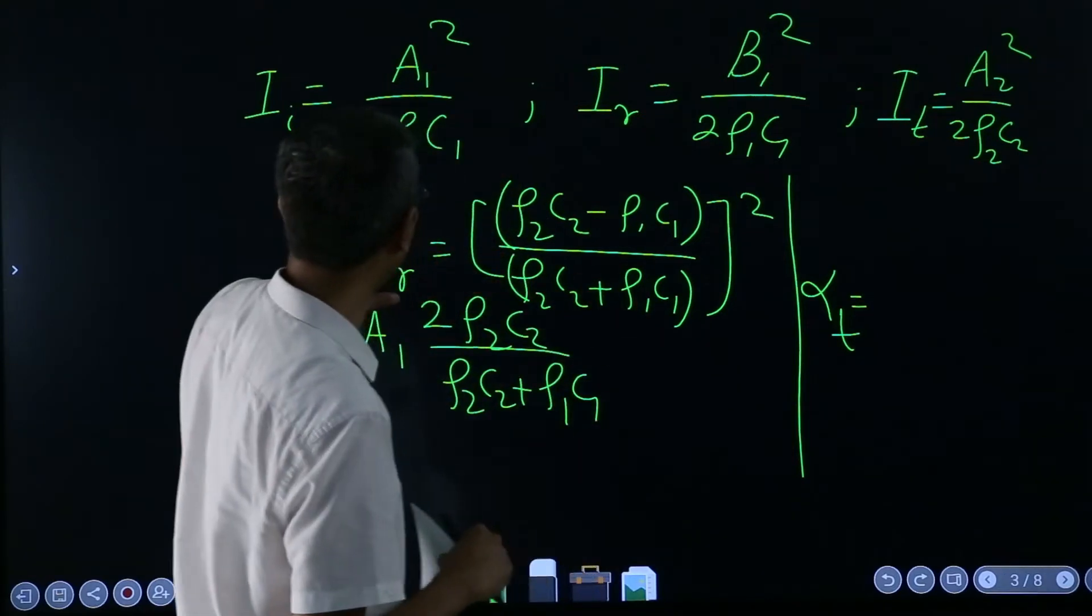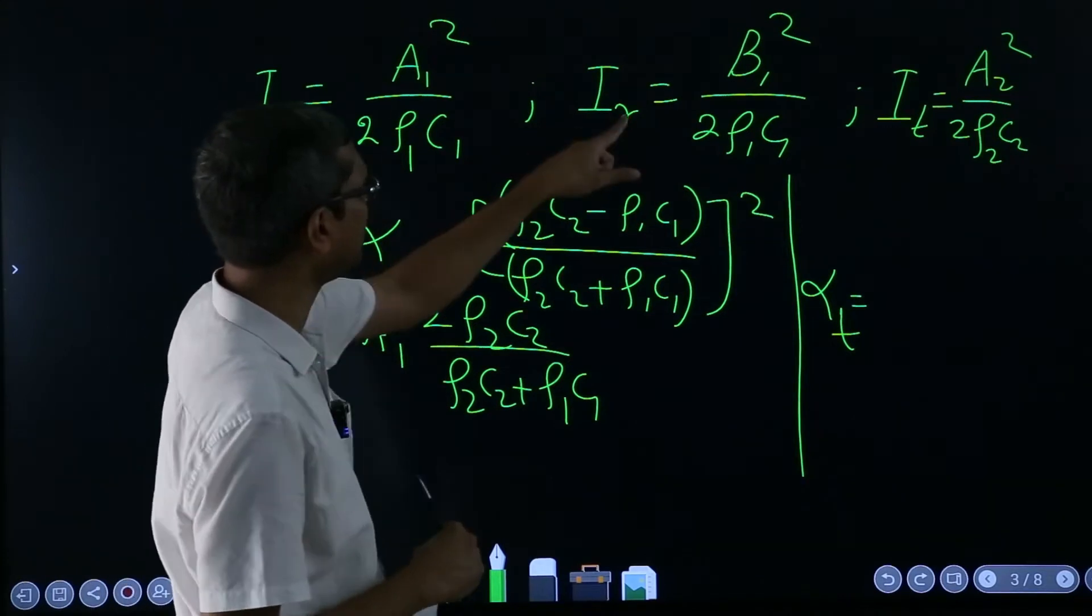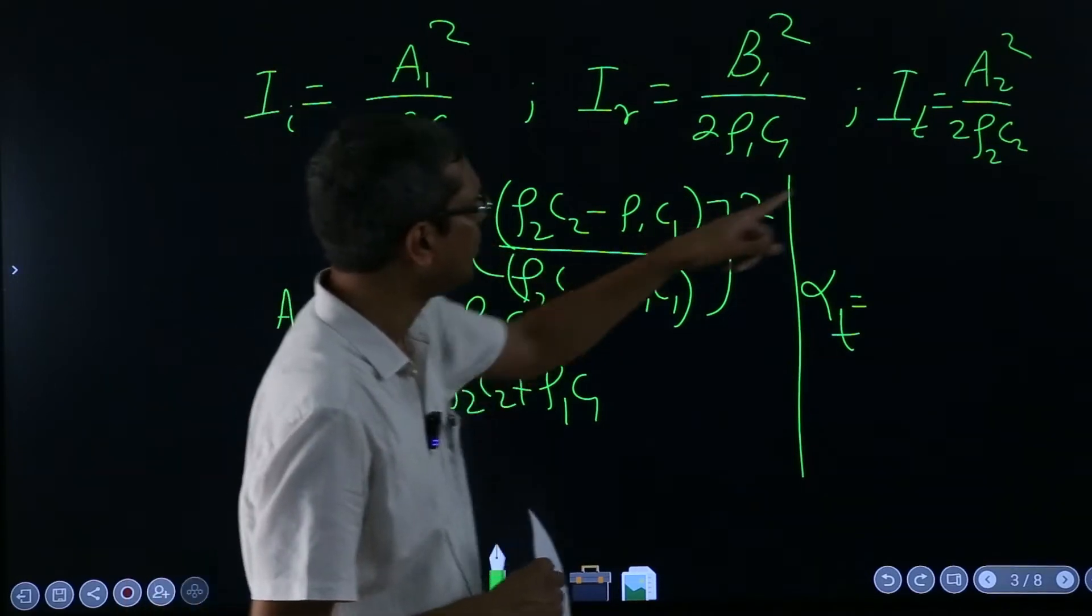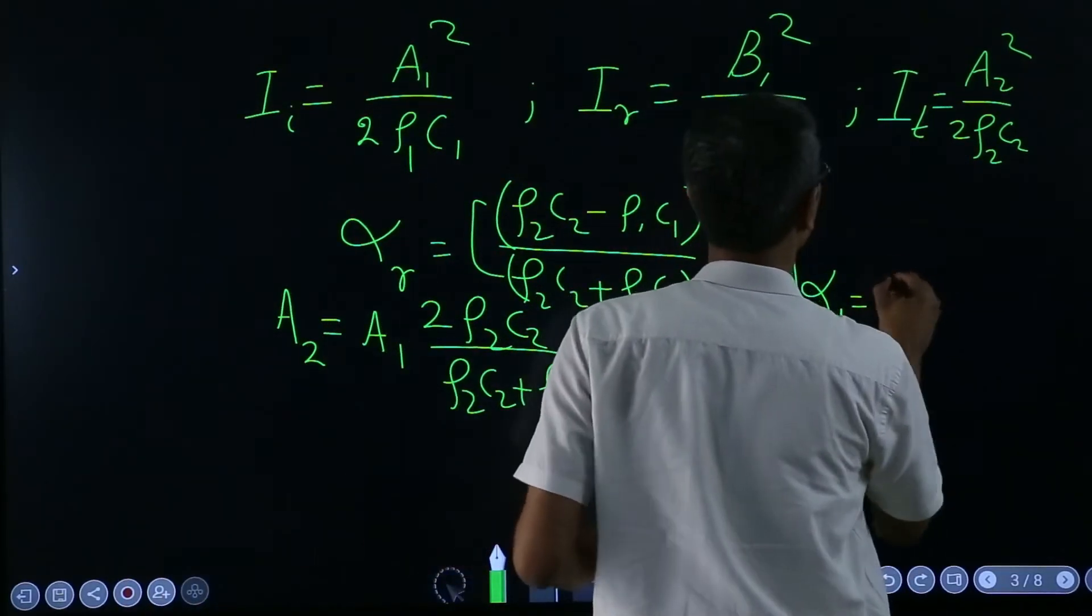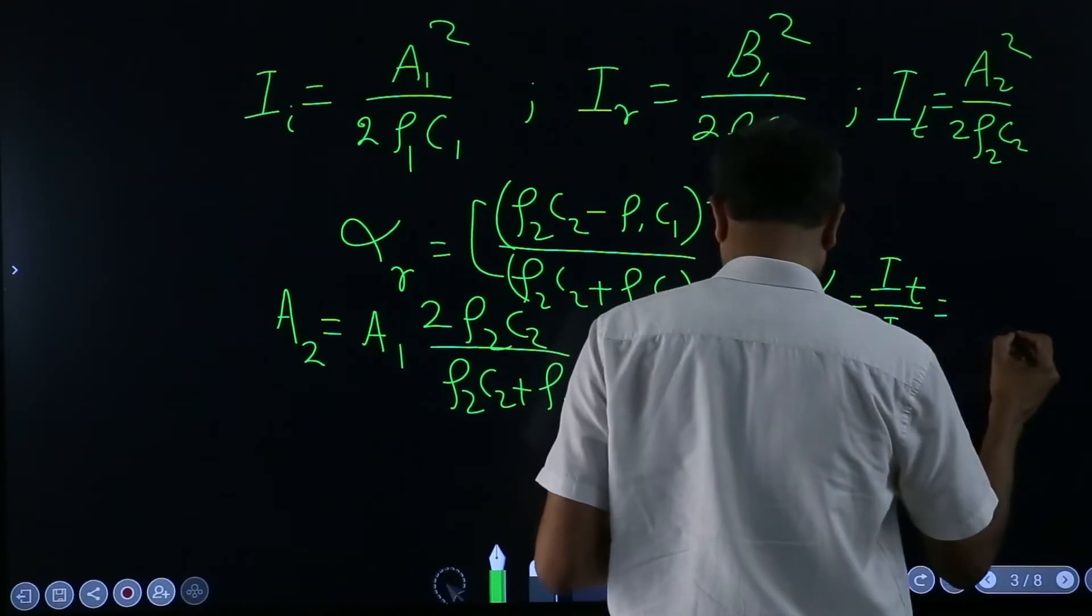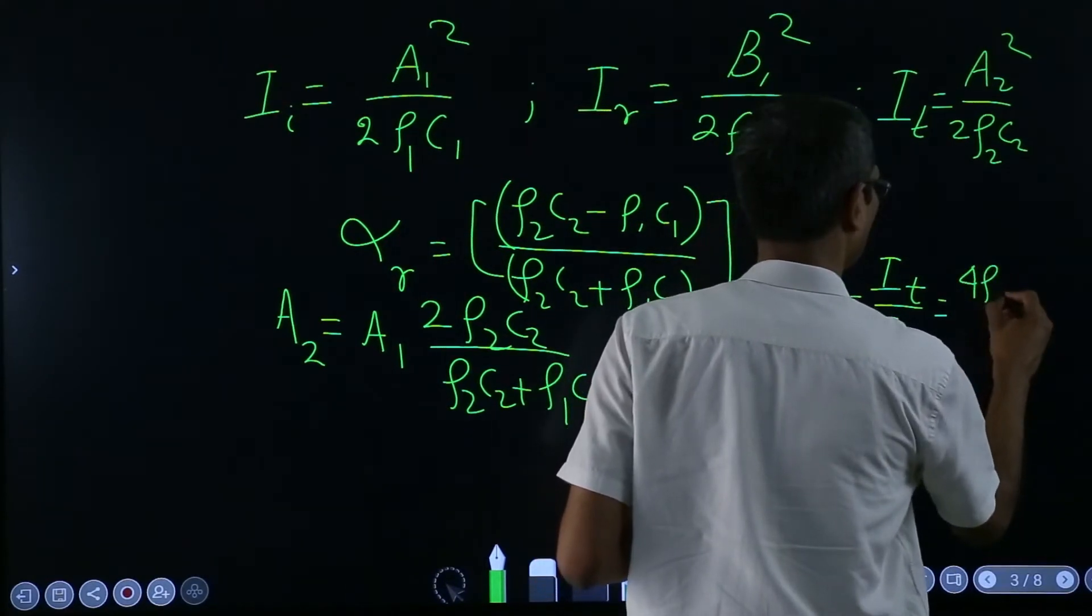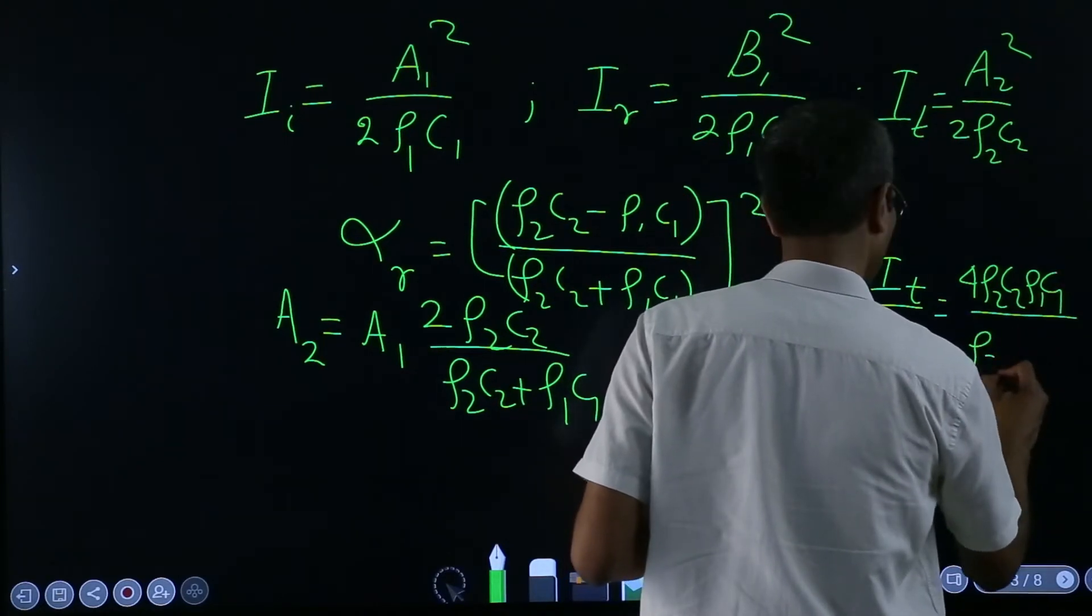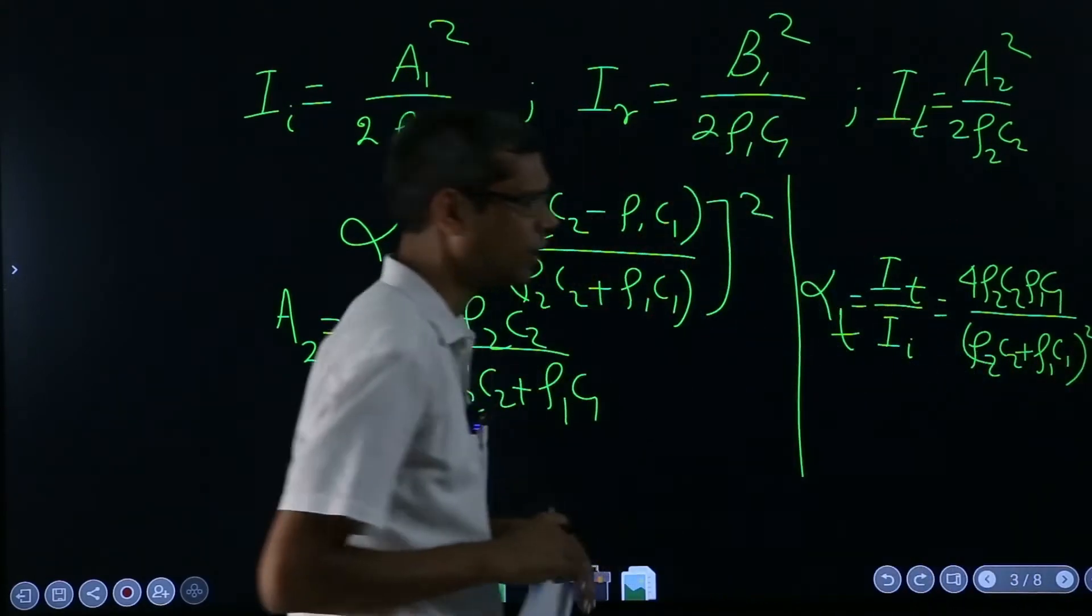So in this, no, they got cancelled out because both incident and reflected were having the same ρ₁c₁ in the denominator, so they got cancelled. But here they will survive, and from there I will write here just I_transmitted by I_incident, which you will get to be 4ρ₂c₂ρ₁c₁ over (ρ₂c₂ + ρ₁c₁)² okay.